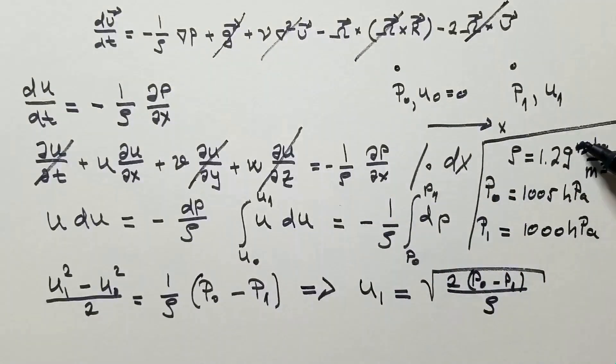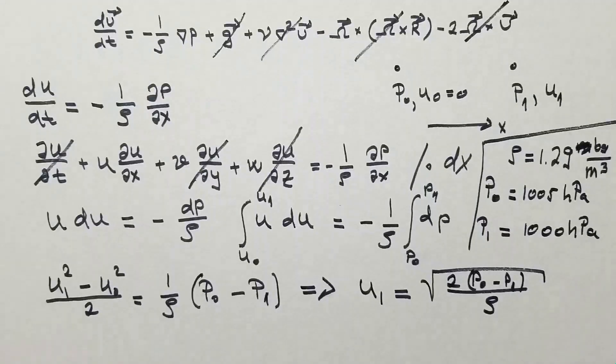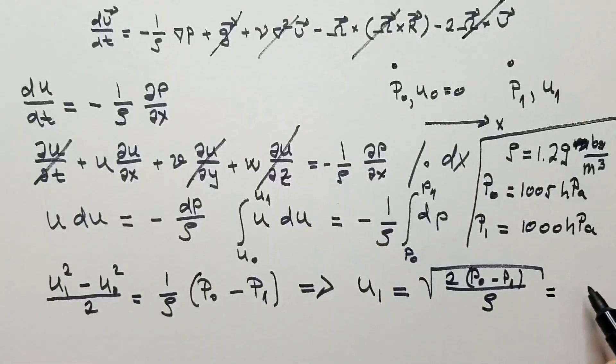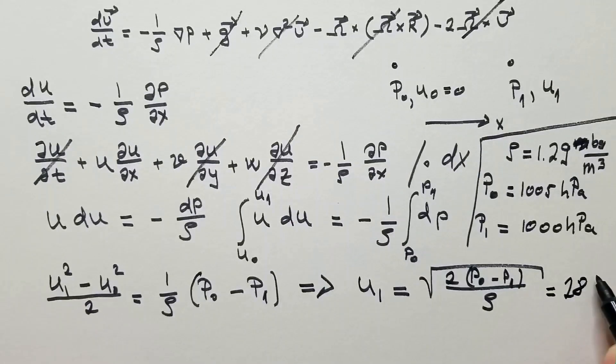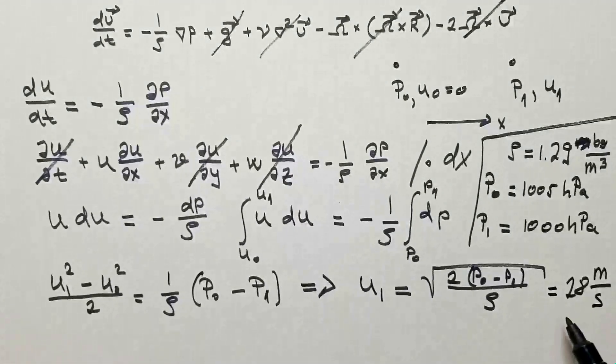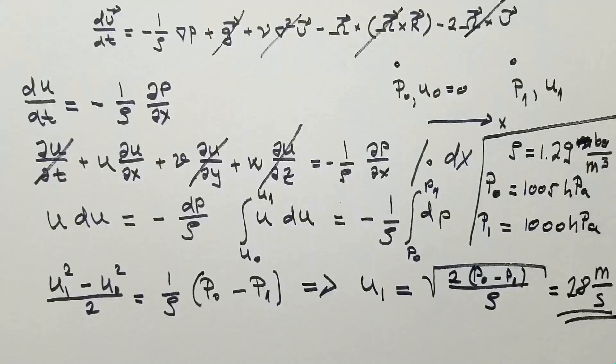Now, I will plug in these numbers in this equation, and I will obtain that the velocity is 28 meters per second. This is the velocity the parcel of air will gain if it is immersed in the pressure field that has the differential pressure of 5 hectopascals.